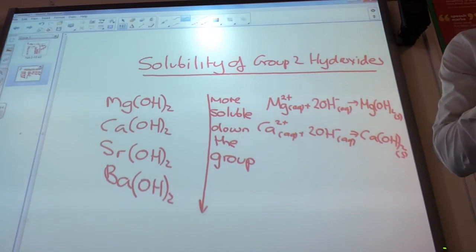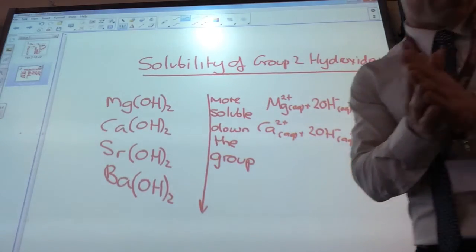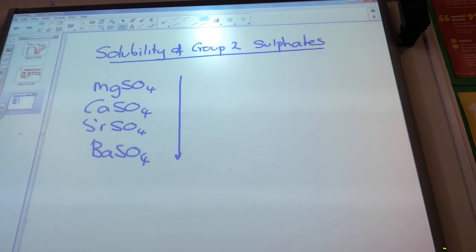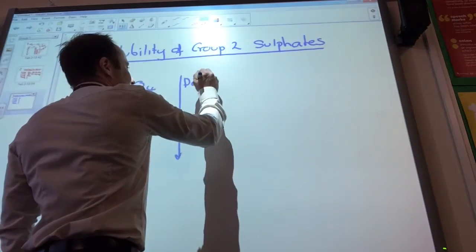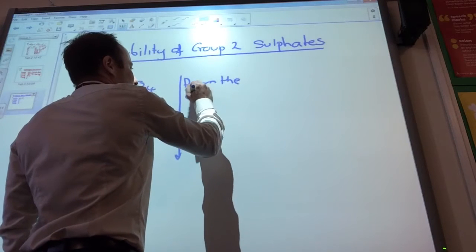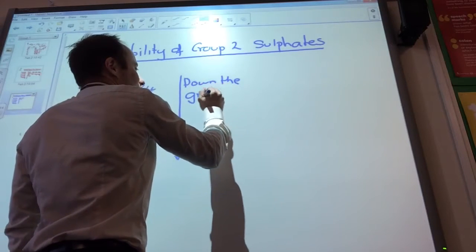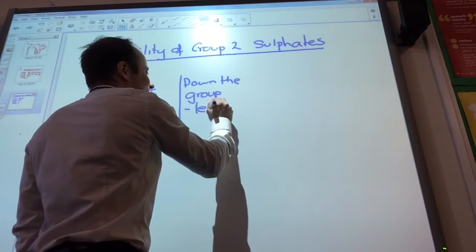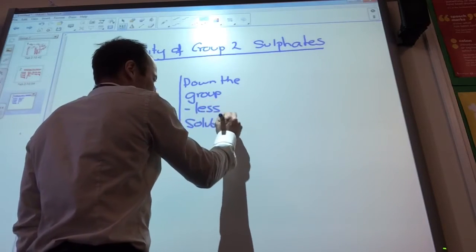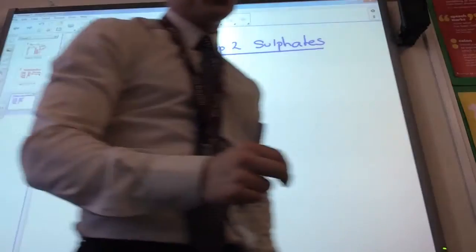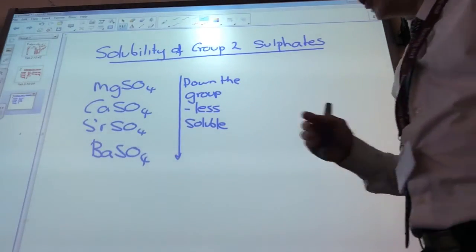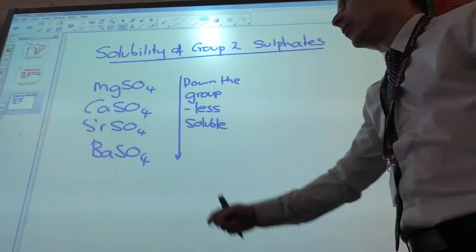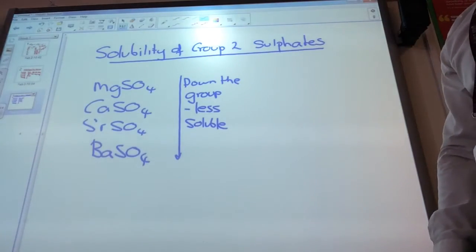So as we turn our attention now to the sulfates, what happens to the solubility of my sulfates as I go down the group? Down the group they become less soluble, yeah it's the opposite. So down the group they become less soluble.